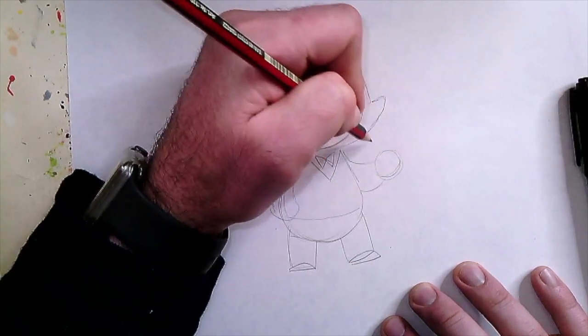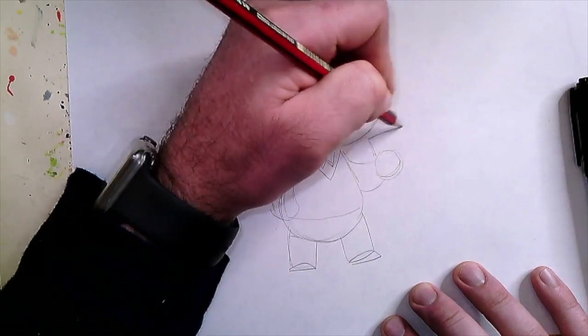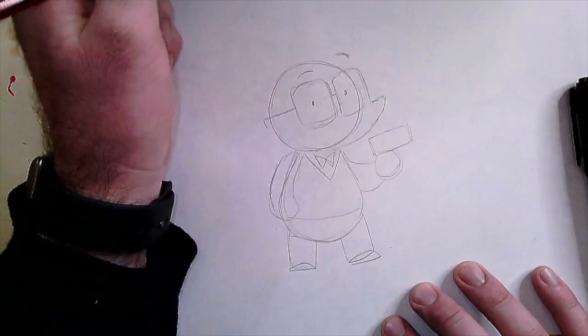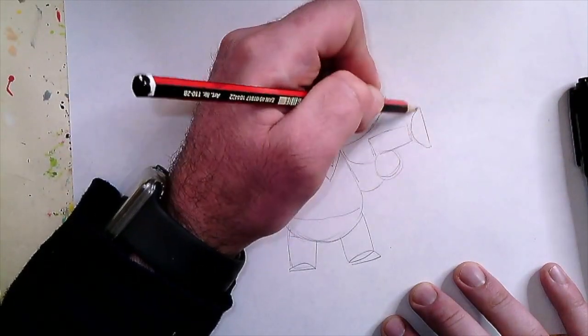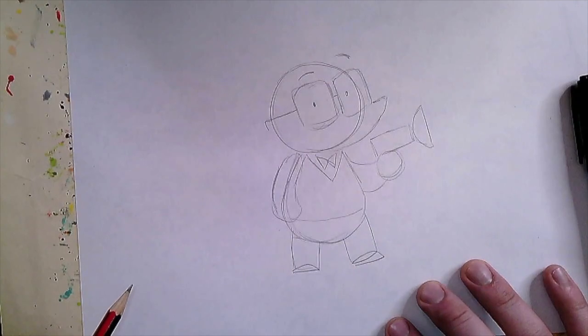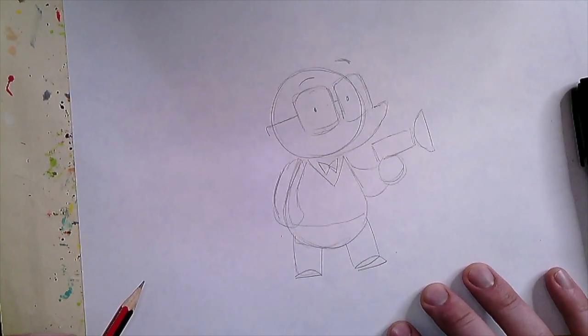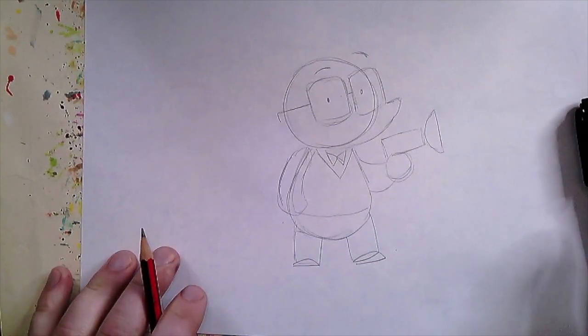Then we're going to draw his suction cup dart gun. All we need to draw here is just a rectangle on top of his hand for now and a semicircle here for where the suction cup will go. Awesome, everyone—we've got all the details that we need.